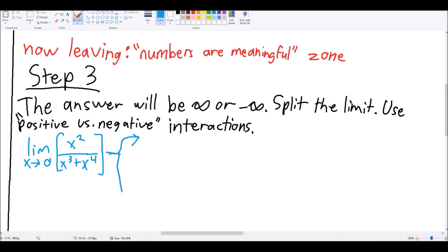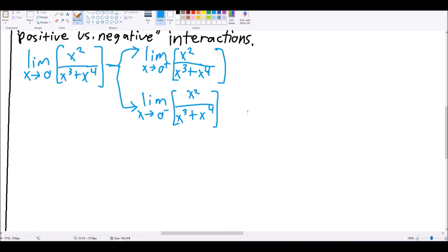So first, split the limit and identify what's positive and what's negative. So, for this, I'm using the 0 plus and the 0 minus to indicate that you're approaching from above or below. This is pretty much just to simplify the limit. So now we can see how the exponents interact.